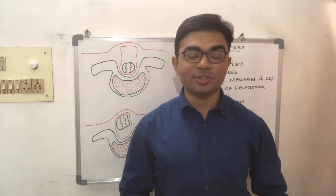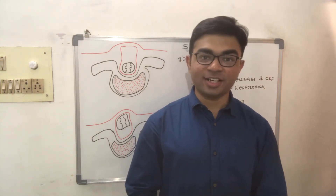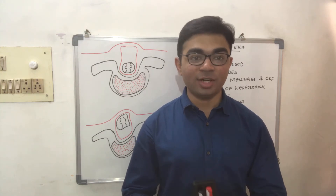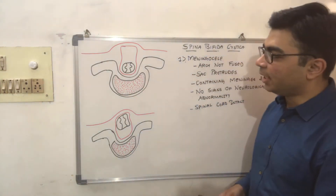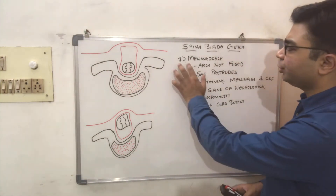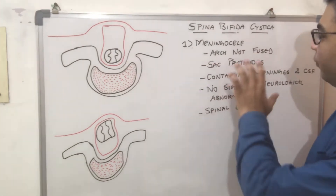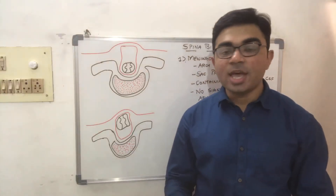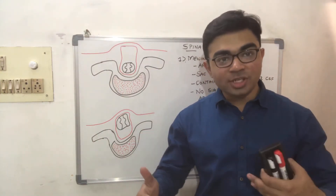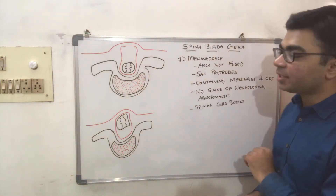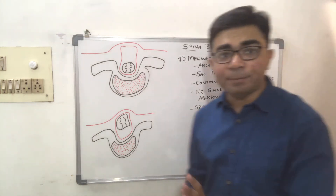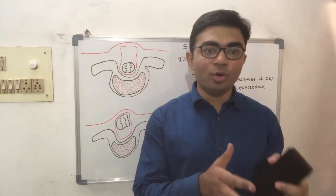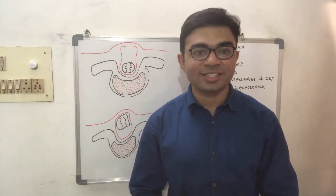In spina bifida cystica, there are two subtypes: meningocele and myelomeningocele. In meningocele, the vertebral arch is not fused and the meninges protrude posteriorly but without containing the spinal cord — the spinal cord remains in place. The protruding sac contains cerebrospinal fluid, and there are no signs of neurological abnormality.